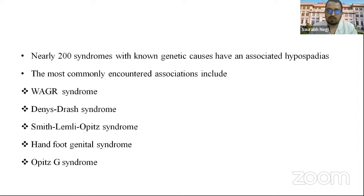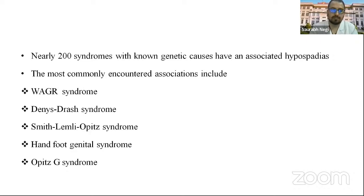There are nearly 200 syndromes associated with hypospadias. The most commonly encountered include WAGR syndrome, which includes Wilms tumor, aniridia, growth retardation, and developmental delay. Other syndromes include Denys-Drash syndrome, Smith-Lemli-Opitz syndrome, Hand-foot-genital syndrome, and Opitz-G syndrome.